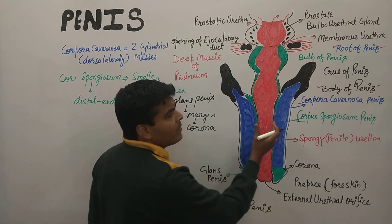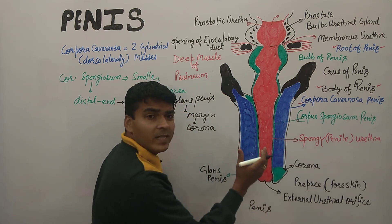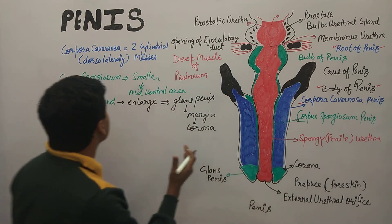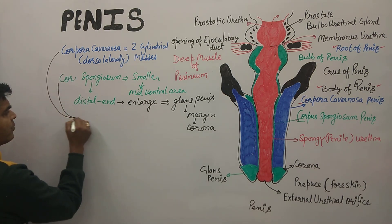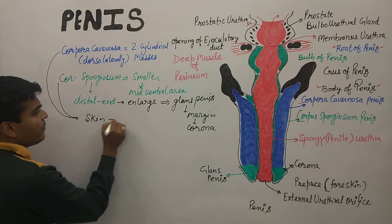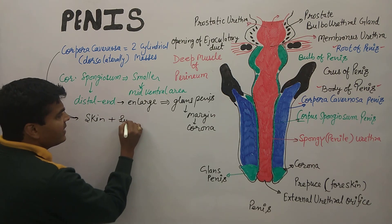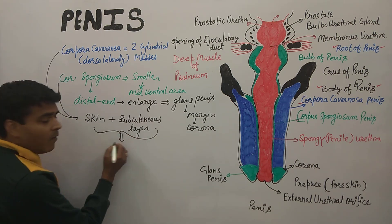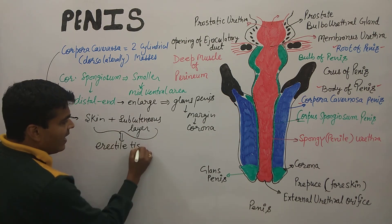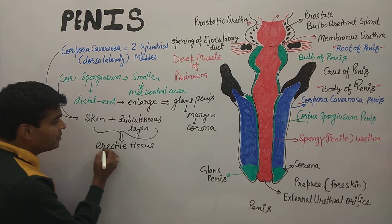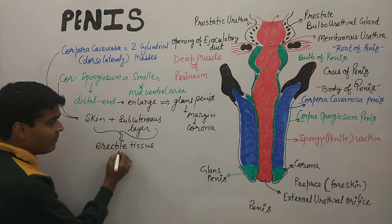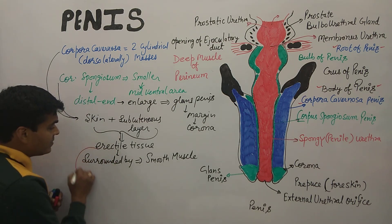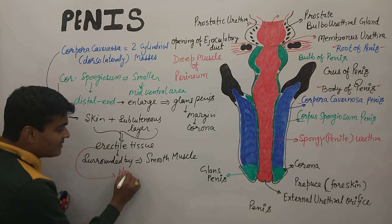Both the corpora cavernosa and corpus spongiosum are covered on all sides by skin and a subcutaneous layer. This covering is made up of erectile tissue, and the erectile tissue is surrounded by smooth muscle. Within the erectile tissue, we also find blood sinuses.